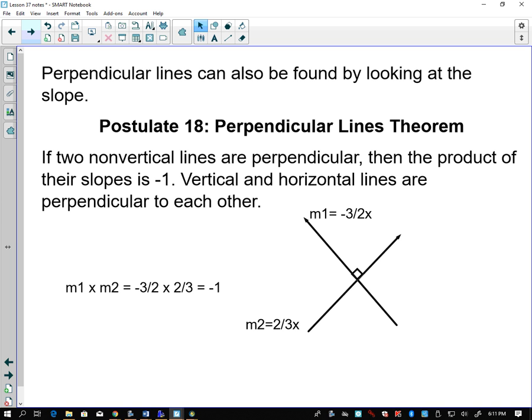Then we're going to look at postulate 18. Perpendicular lines can also be found. If two non-vertical lines are perpendicular, then the product of their slopes is negative 1. We don't often really do that. You can do it to test to see if you're working with perpendicular slopes. In this case, we would take negative 3 halves, multiply it by 2 thirds to see if it equals negative 1. An easier way to look at this is that if I have negative 3 halves, and I want to know what is a perpendicular slope, I'm going to flip 2 and 3, and instead of having a negative, I'm going to leave that positive.